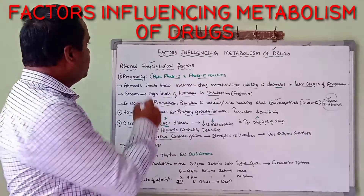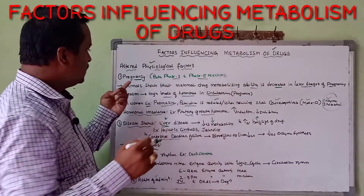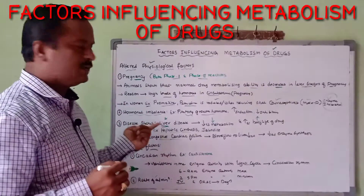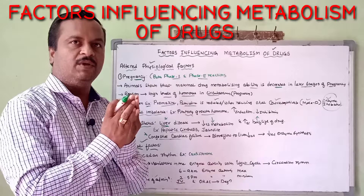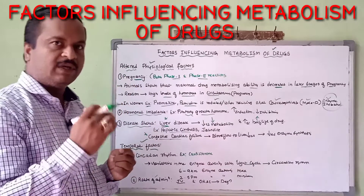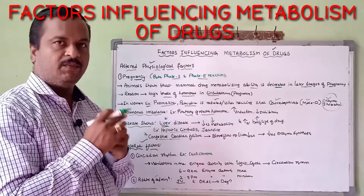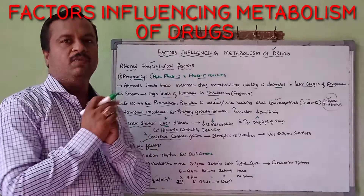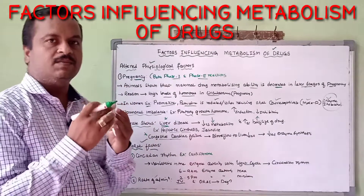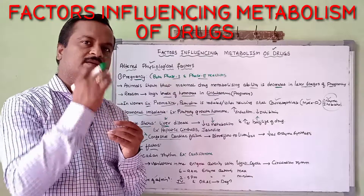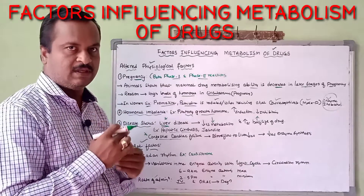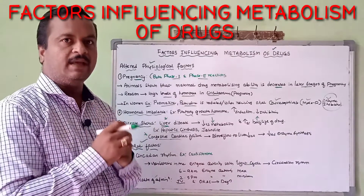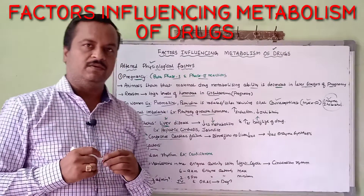So in this class, I have clearly explained the altered physiological factors — that is pregnancy, hormonal imbalance, and disease status — which influence the rate of metabolism. The route of administration is also very much important. Thank you very much for watching this video.